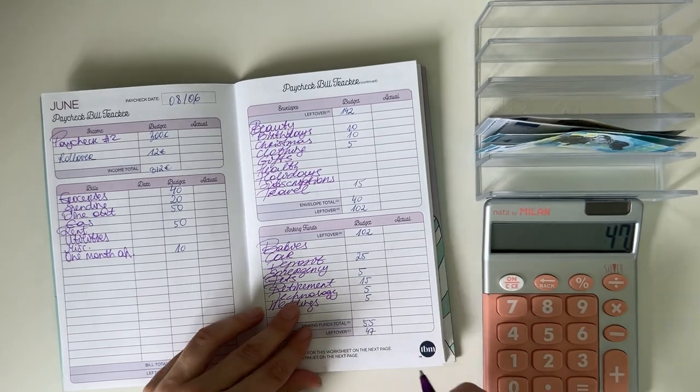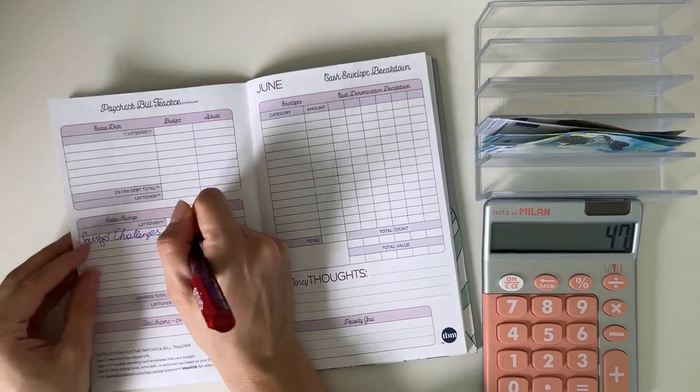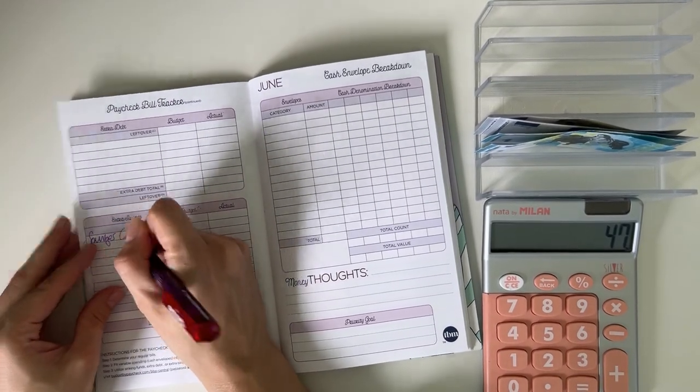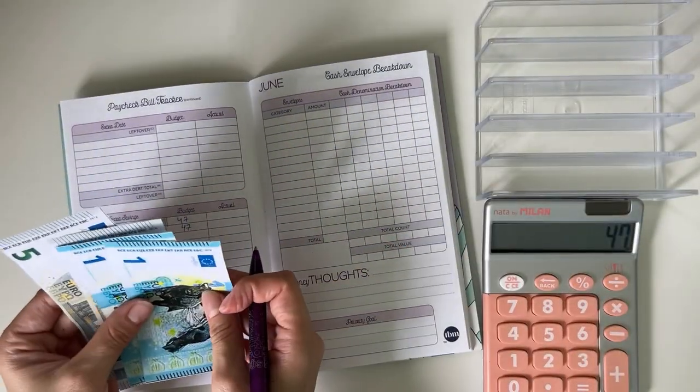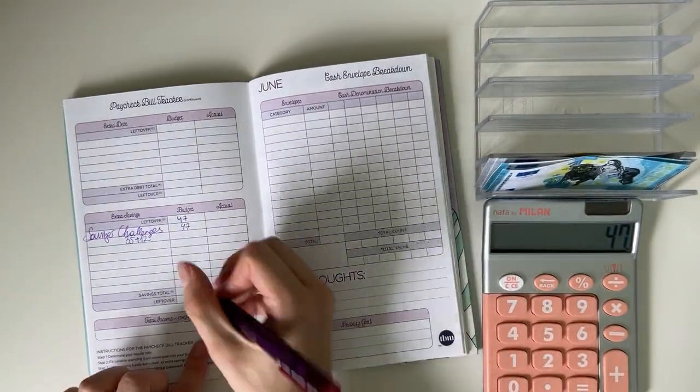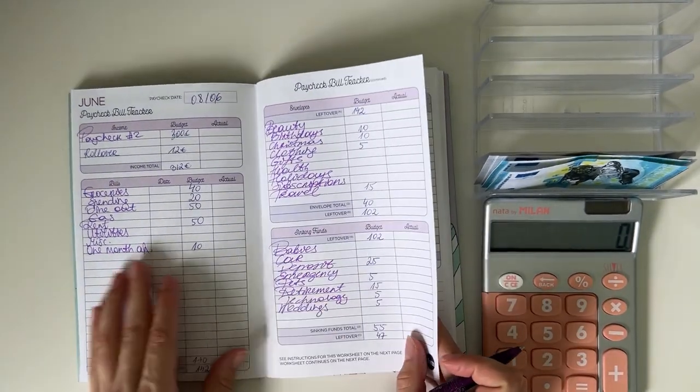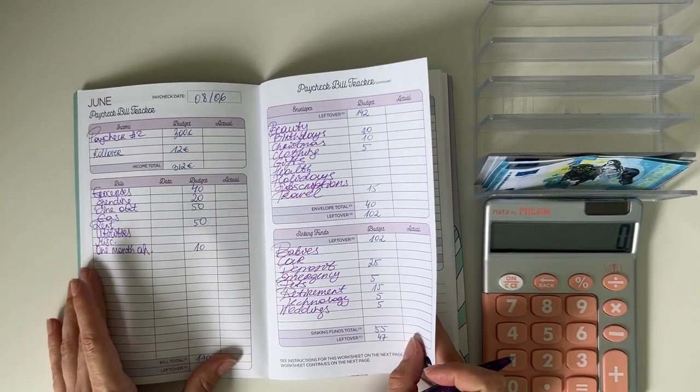So 47—we have 35 allocated from the paycheck plus the 12 we have of the rollover which is 47 going into the savings challenges in tomorrow's video. So that was a very quick, very thorough layout for next week's budget.